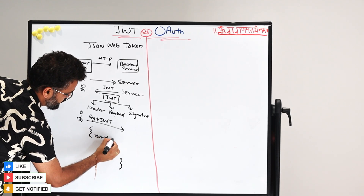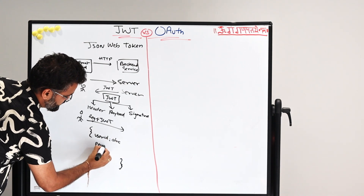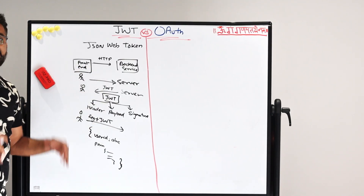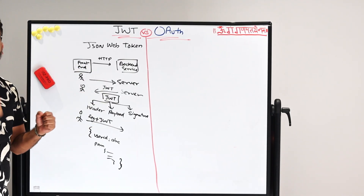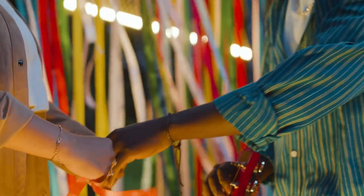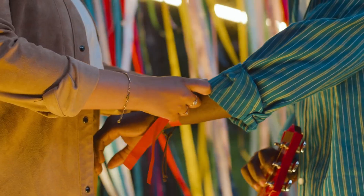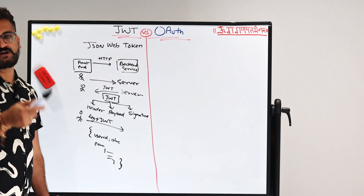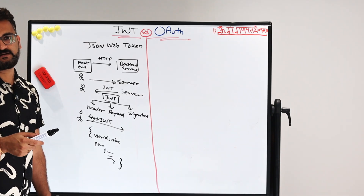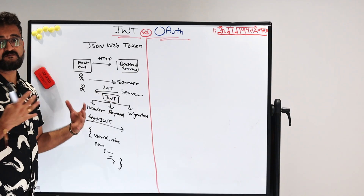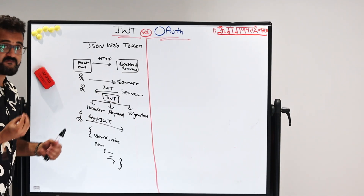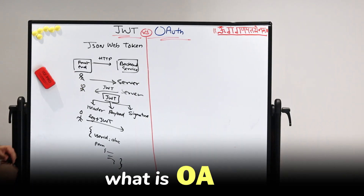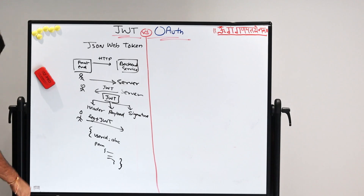For example, user ID equals ABC. There could be permissions which are further embedded in this token. But this token is in itself self-sufficient — it has everything. It is kind of a VIP wristband which is given. If you are going to a concert, once you have that particular wristband, anyone scans it and knows who you are and which row or area you can access in the theater. So JSON Web Token is the actual token given for authenticating and authorizing a request. The question arises: what is OAuth, because these two sound quite similar?